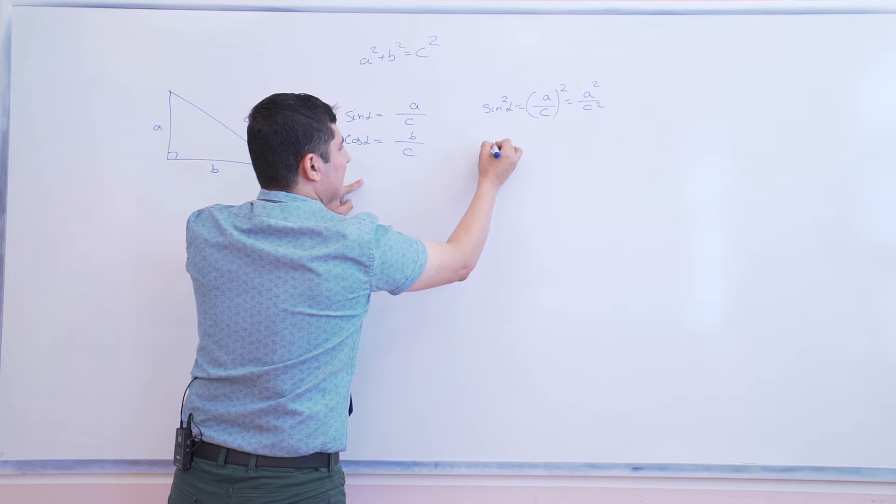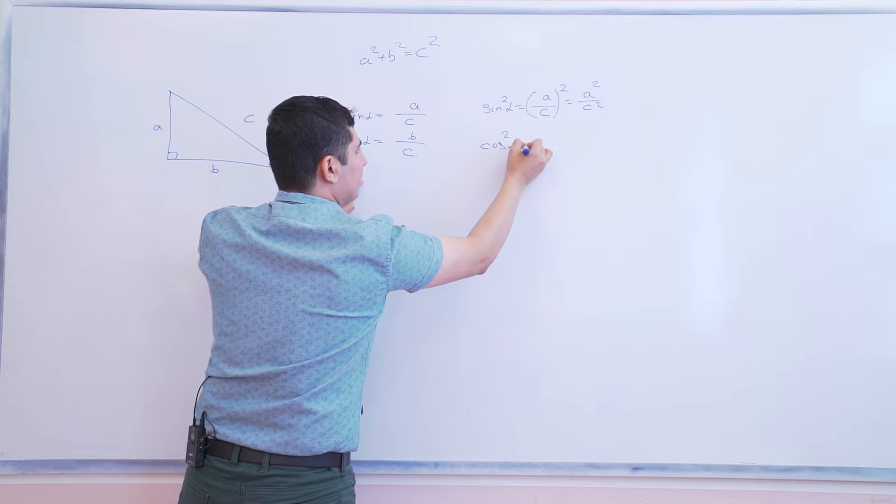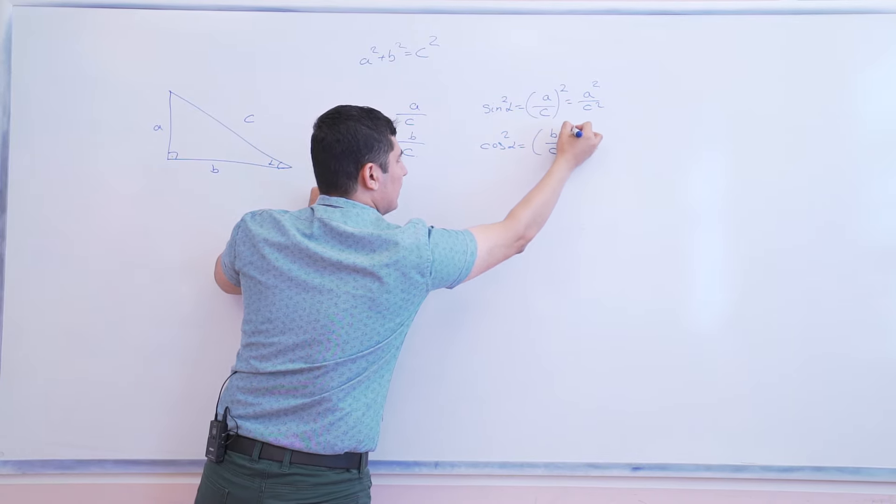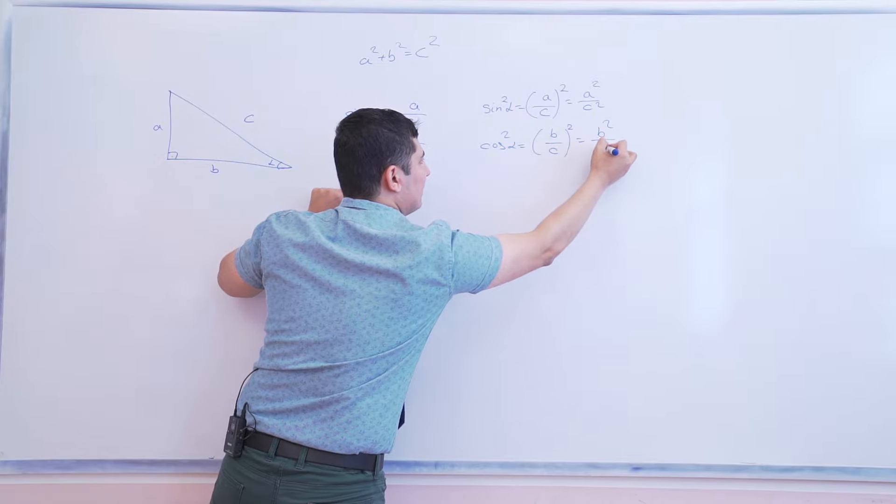In the same way you can find the cosine squared alpha. B divided by C squared. It will be B squared divided by C squared.